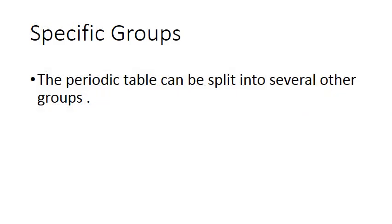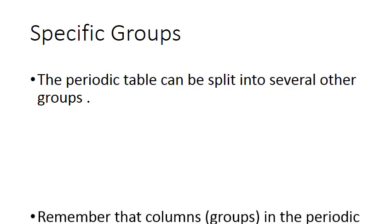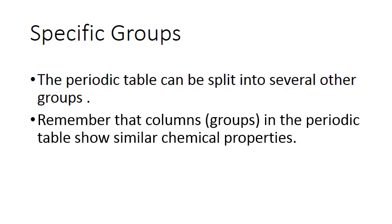The periodic table can also be split into several other groups, and specifically groups, the vertical columns in the periodic table. These groups in the periodic table show very similar chemical properties. So many of these groups have their own names. So we're going to go through several of those right now.